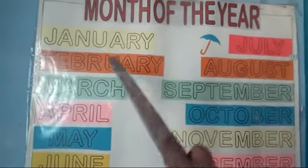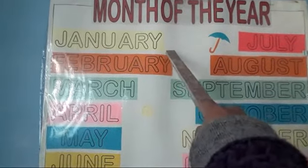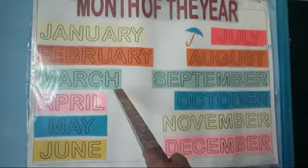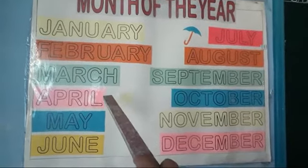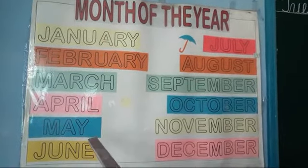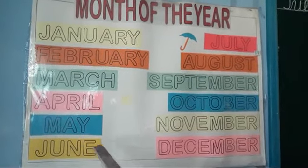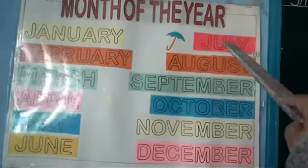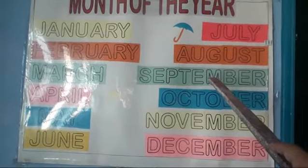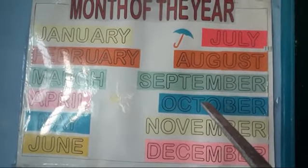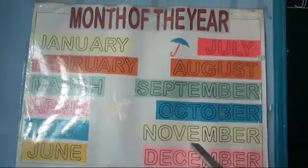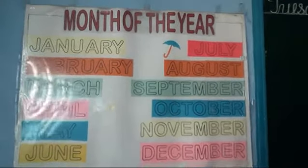Okay. Now: 1st January, 2nd February, 3rd March, 4th April, 5th May, 6th June, 7th July, 8th August, 9th September, 10th October, 11th November, and 12th December.